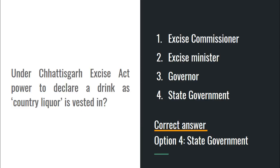Question 1: Under the Chhattisgarh Excise Act, power to declare a drink as country liquor is vested in whom? The answer is the state government, and this power is provided under Section 4. Section 4 also gives the state government the power to declare any drink as foreign liquor.